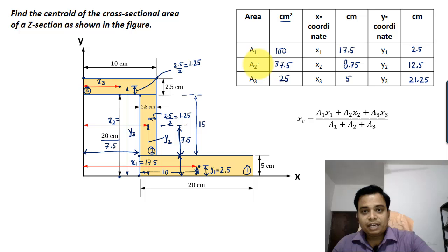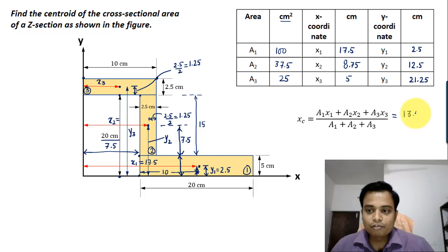Then you just need to put in all the values of A1, A2, A3 and x1, x2, x3 into this very famous formula of centroid calculation, and you're going to get the value of the centroid x coordinate as 13.55 centimeters. In the same manner, put the values of A1y1, A2y2, and A3y3 into this formula, and you're going to get the value of yc as 7.69 centimeters approximately.